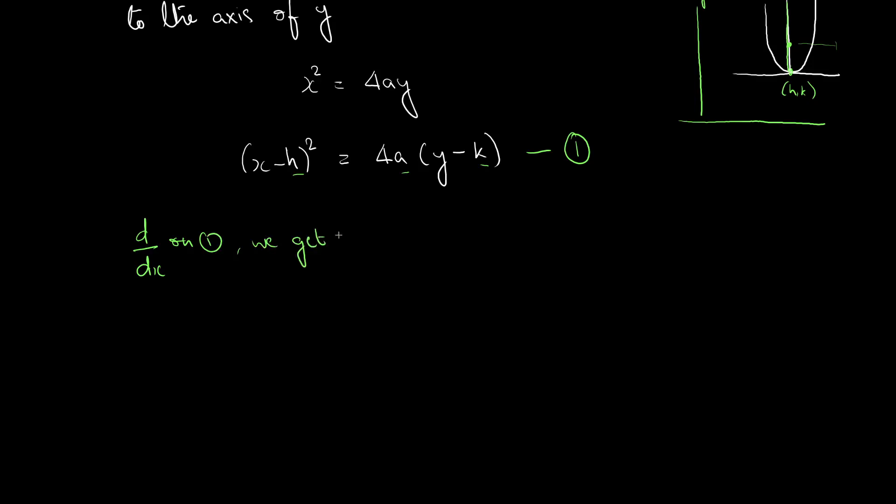We get 2x minus h equal to 4a into y dash. So, call this equation 2.